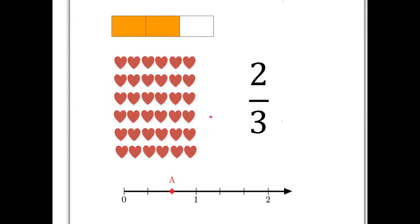If we take this group of hearts, we can see two-thirds there by doing what we always do. We divide into three absolutely equal parts, and then we choose to take two of those equal parts. So that group of hearts here is two-thirds of the whole lot of hearts.